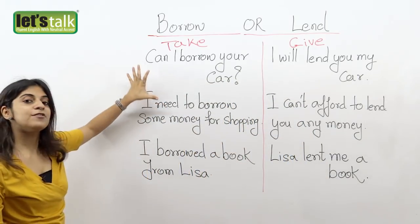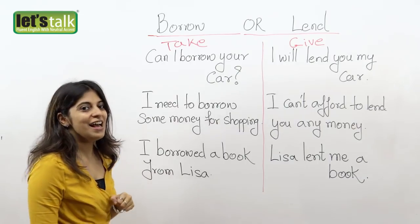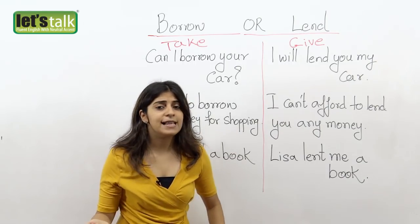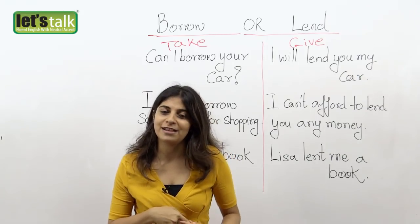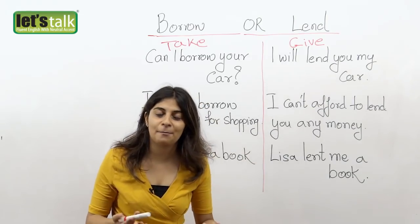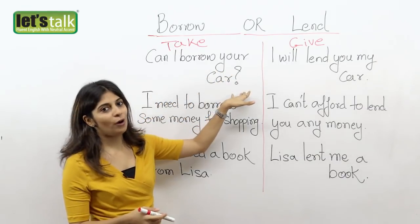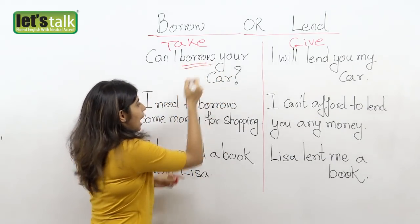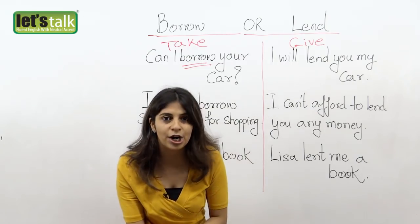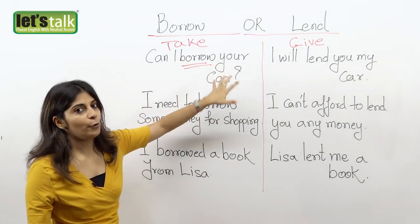So we are going to look at a couple of sentences here, where you would understand what exactly the difference is between these two words. So: "Can I borrow your car?" Maybe I don't have a car and my mom does, and I have a plan to go out for shopping with my friends. So I need a car to go shopping, and I'm going to ask my mother for a car — hence I am borrowing the car from her. So how would I ask her? "Can I borrow your car?"